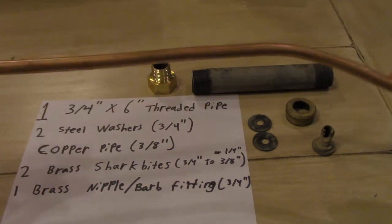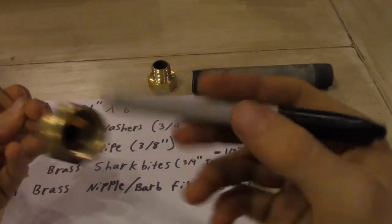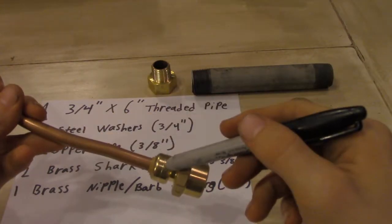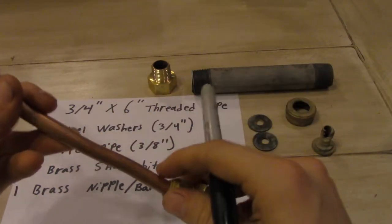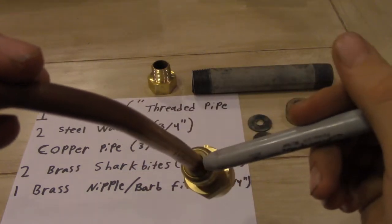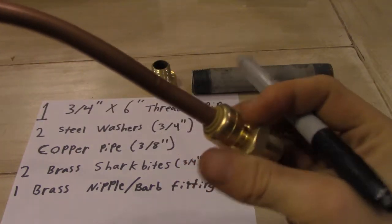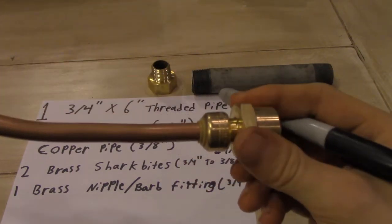And then you need two shark bite three-quarter inch to three-eighths inch female shark bite adapters, which the tube you simply push in here and then you're done. And they can twist and all that just fine and fairly watertight.